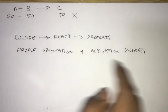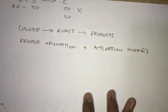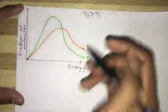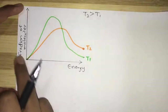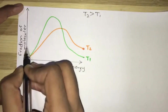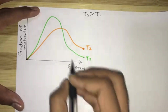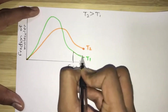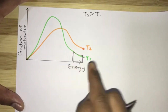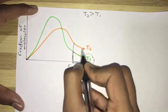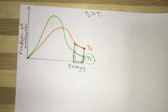So out of 50, you might only get 20 product molecules, for example. But when you increase the temperature, the fraction of molecules that actually react after collision increases. Assuming T2 > T1, the number of molecules reacting after collision at T1 is lower, but when temperature is raised to T2, that fraction increases significantly, as shown in the graph.